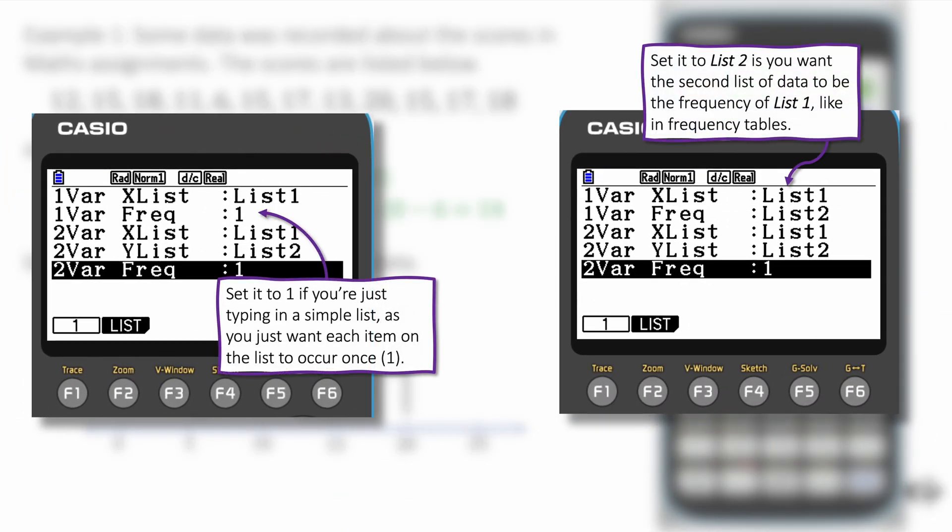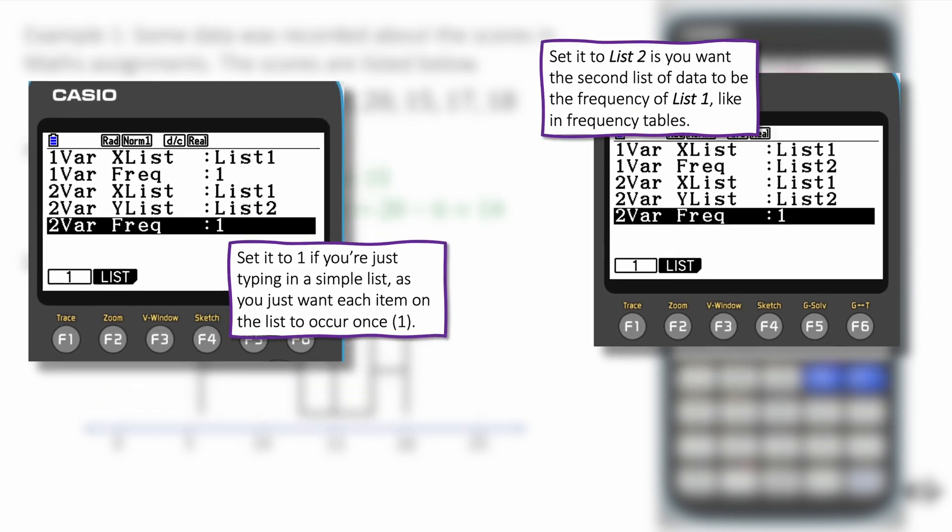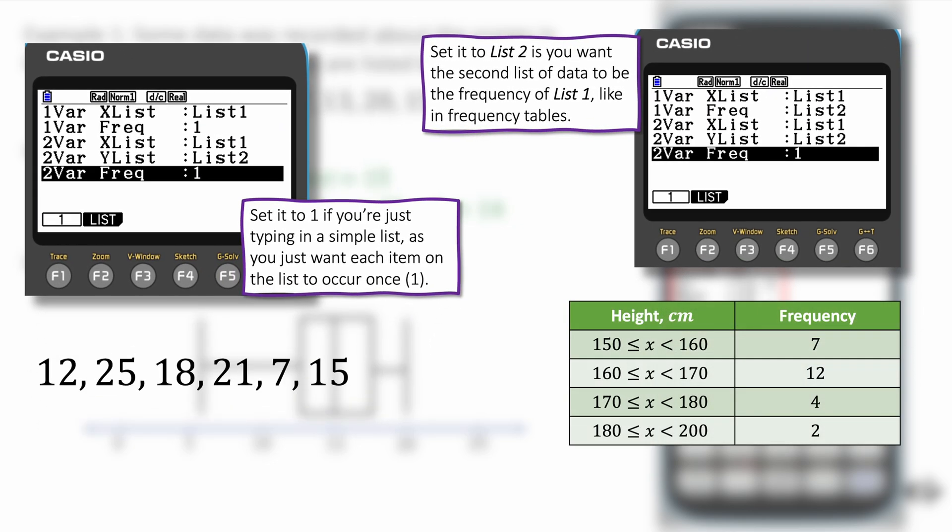Now just to refresh the settings there because it's really important, you set one variable frequency to one if it's just a list of data. Whereas if it's a frequency table, you set one variable frequency to be list two. So we've got the list settings on the left and the frequency table settings on the right. Just be careful there. It is a really important step.